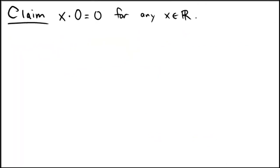For this problem, we're asked to prove that x times 0 equals 0 for any real number. To proceed along this path, we're going to be using just the field axioms. So let x be a real number.